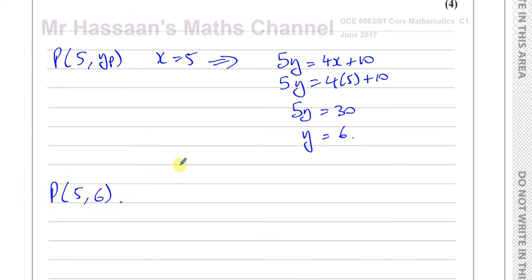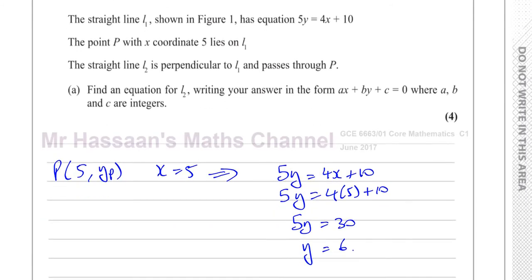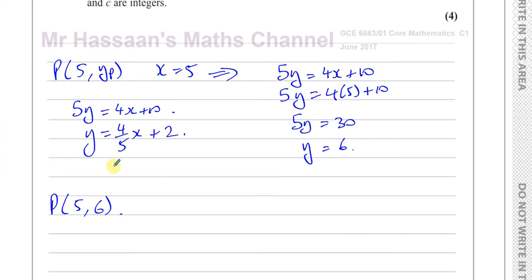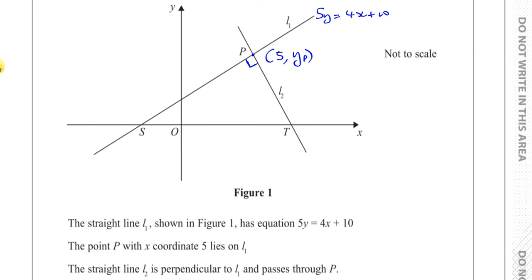So the point P is 5, 6. And the other thing I can do is I can take the equation of line 1 and work out from it its gradient. So 5y equals 4x plus 10. If I express it in the form y equals mx plus c by dividing both sides by 5, I'll have 4 over 5x plus 2. So the gradient of line 1 is equal to 4 over 5.